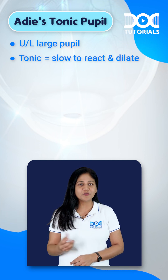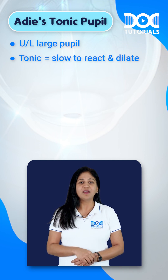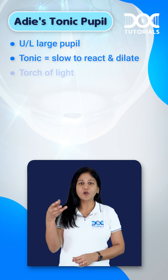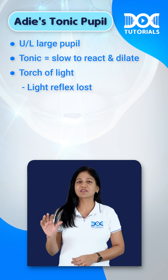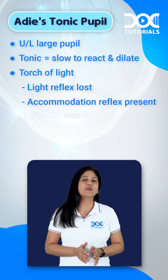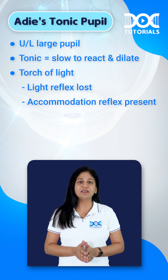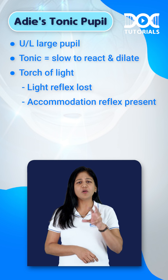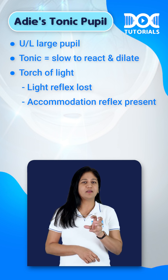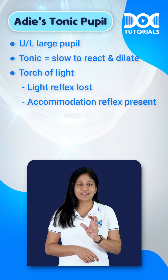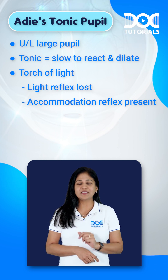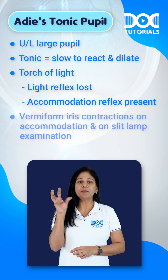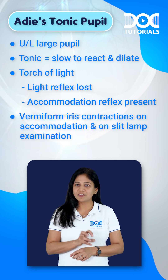It is slow to react and slow to dilate. When you show a torch of light, the light reflex is lost, but the accommodation reflex is present — it is also a tonic reflex. On examination, we see vermiform iris contractions on accommodation and on slit lamp.